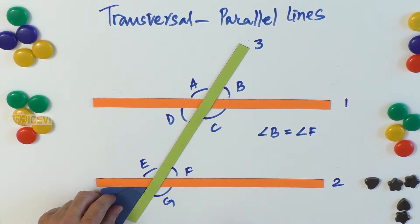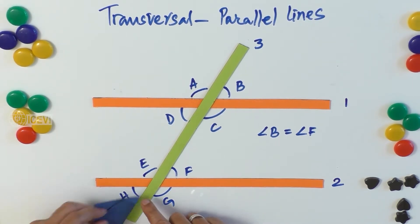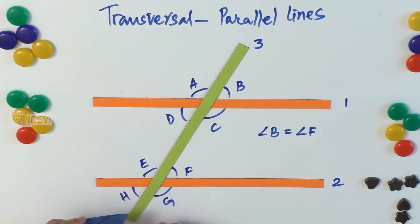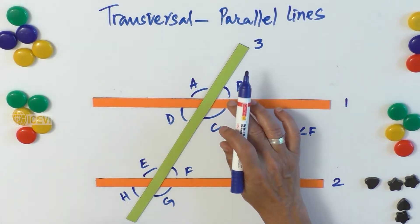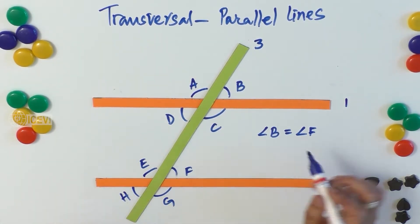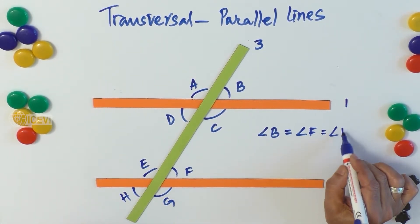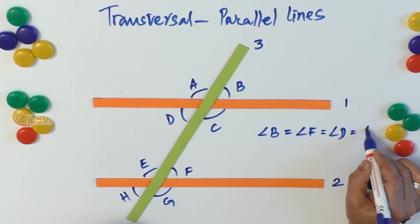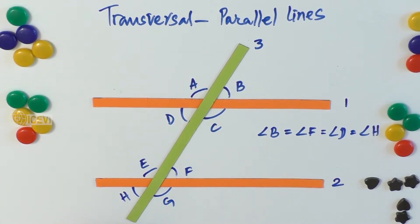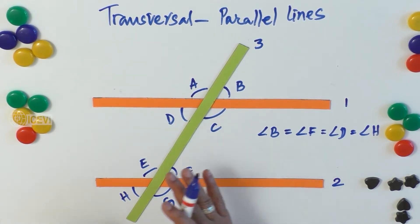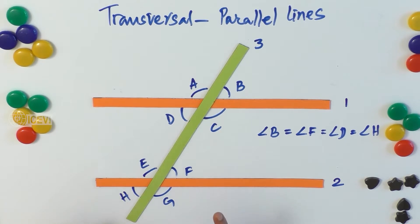So D should be equal to B since they are vertically opposite. D and H are corresponding angles, so D equals H as well. And H and F are vertically opposite angles. Therefore, angle B equals angle F equals angle D equals angle H. This is one key property — all four of these angles are equal when the two lines are parallel.